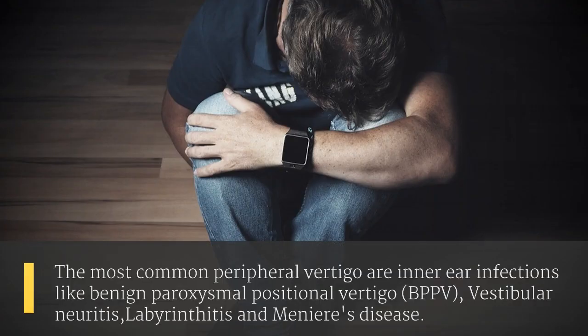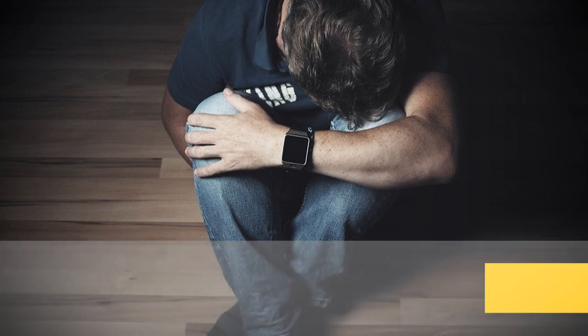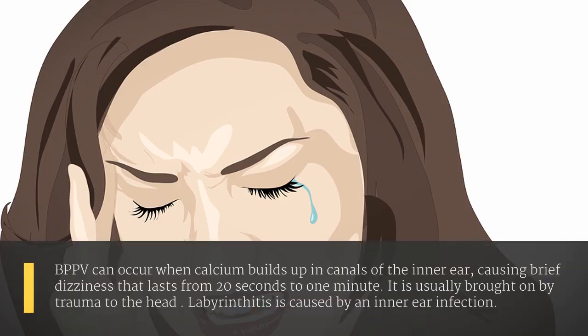The most common peripheral vertigo conditions are inner ear infections like benign paroxysmal positional vertigo (BPPV), vestibular neuritis, labyrinthitis, and Meniere's disease. BPPV can occur when calcium builds up in canals of the inner ear, causing brief dizziness that lasts from 20 seconds to 1 minute. It is usually brought on by trauma to the head.